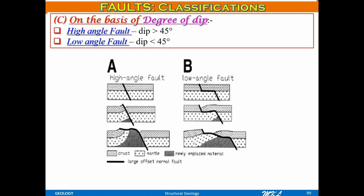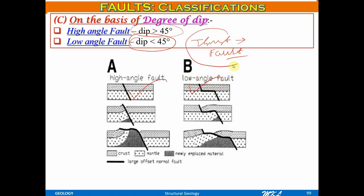High-angle fault: dip greater than 45 degrees; low-angle fault: dip less than 45 degrees. A thrust fault is a low-angle fault because the dip is less than 45 degrees. So when you say it's a thrust fault, I can understand it's a reverse fault and also a low-angle fault — both have the same meaning in that context.